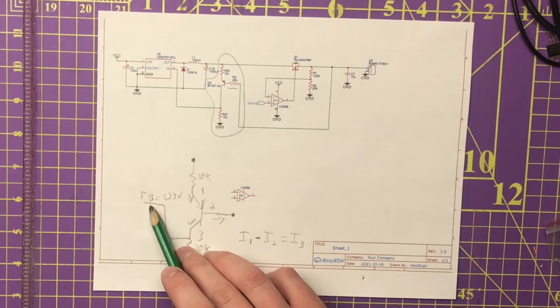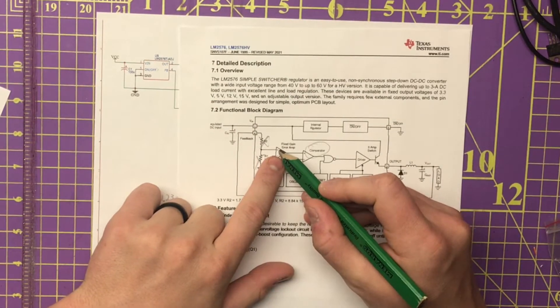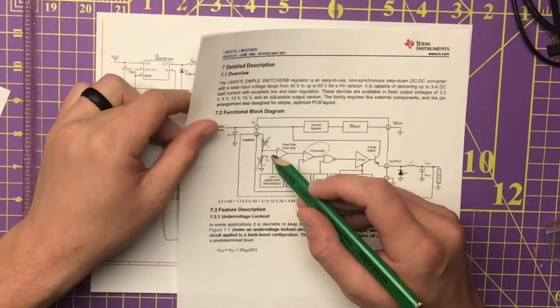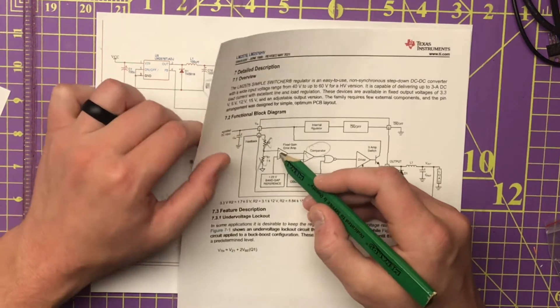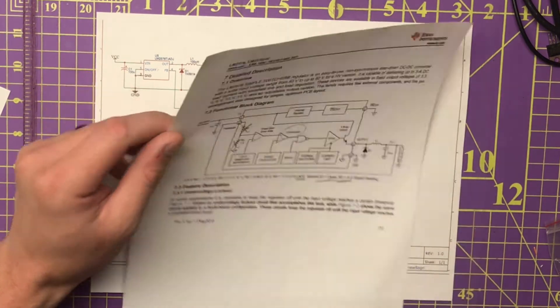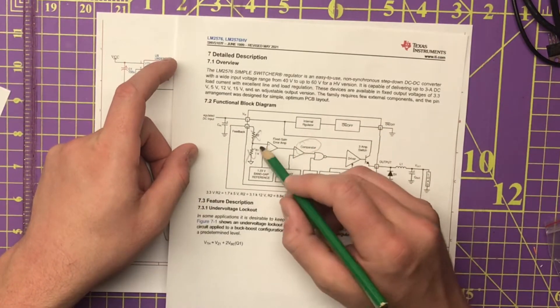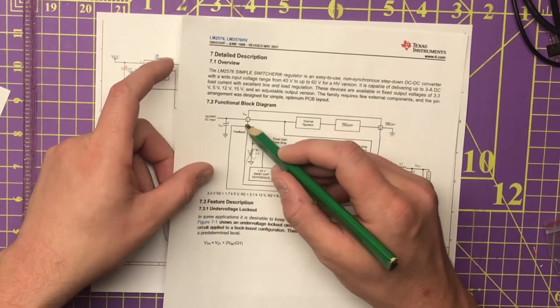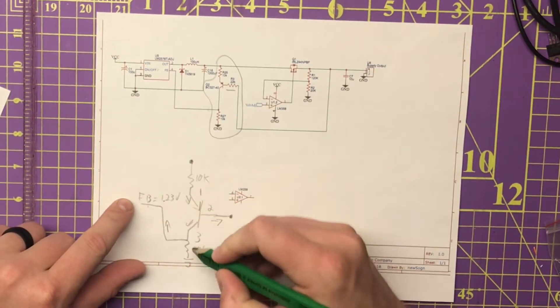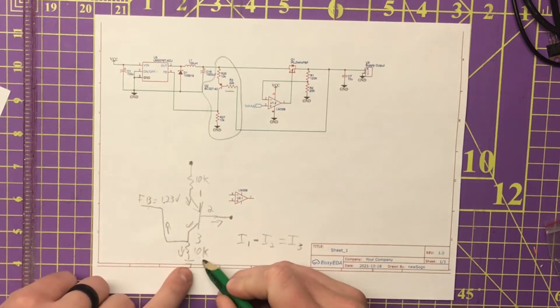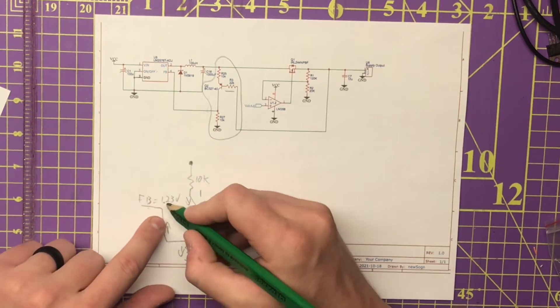So I3 will equal across 10k because remember this feedback right here goes into an op amp and that op amp is, remember with the rules of an op amp, no current flows in or out of an op amp input. Again, go back and watch Dave Jones's videos about that, but that's one of the rules of an op amp. No current flows in, so no current should be flowing into or out of that feedback pin. That means no current's going this way. It's all going through this 10k resistor. So we know that this node right here is going to be maintained at 1.23 volts.